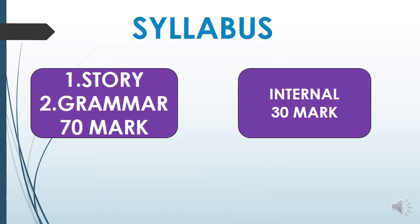First of all, let us talk about our syllabus. Our syllabus is divided into two portions — first is the story and second is the grammar. Both portions will be asked in your university exam for 70 marks total.